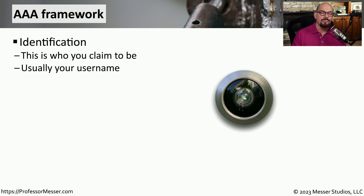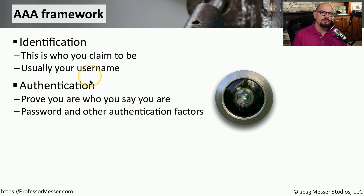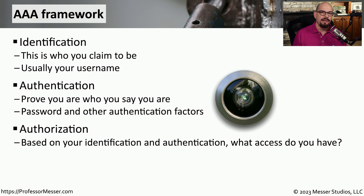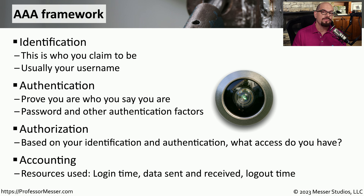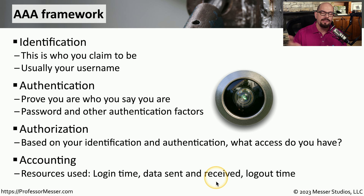The AAA framework begins with identifying the person who's trying to connect to the network — this is the identification, usually based around your username. Then we begin the three A's: we start with authentication, usually a combination of your username with the password. The password, being a secret, authenticates that you must be that person logging into the network. The second A stands for authorization — once you gain access to the network, what resources do you as that individual have access to? And the third A stands for accounting, which is a list of metrics associated with your login session, such as the time you logged in, how much data was sent and received, and the time that you logged out.